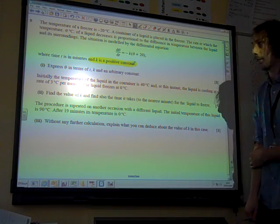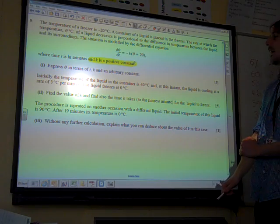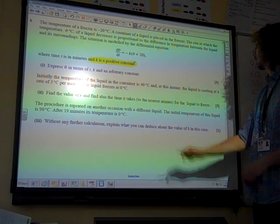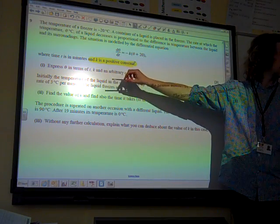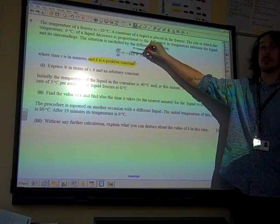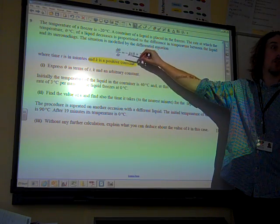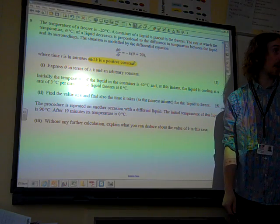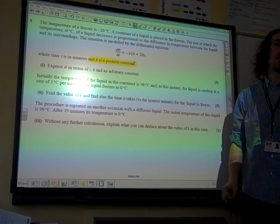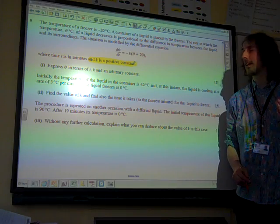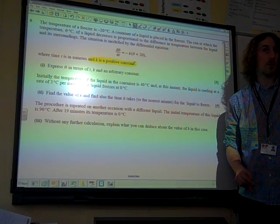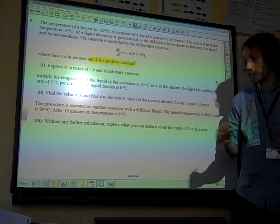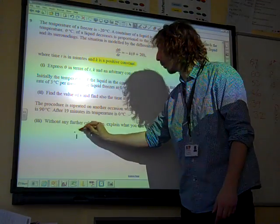k is a positive constant. Express θ in terms of t, k, and an arbitrary constant. So this is basically saying, go from this differential equation to write what θ is in terms of the other stuff. We need to end up saying what θ is. Well, if we're going to get from dθ/dt to what θ is, we're going to have to separate variables and integrate and do that thing.